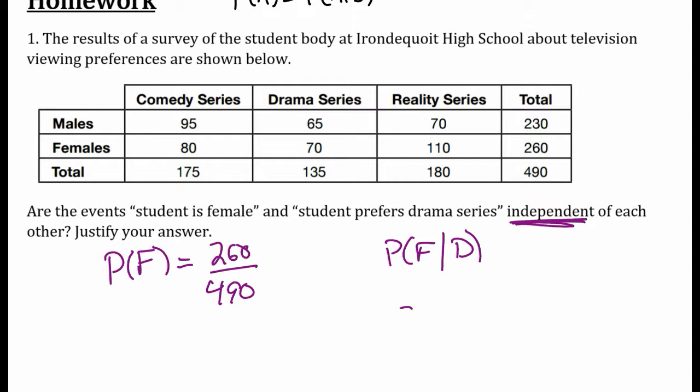That's the probability of female, and we can get a decimal approximation for that. We can also compute the probability of female given drama series. Knowing that they like drama series, my world now shrinks down to drama series. The probability of female and drama series is 70 out of 135.